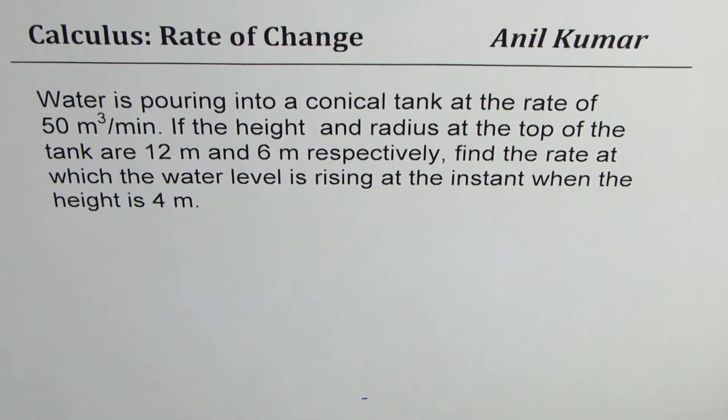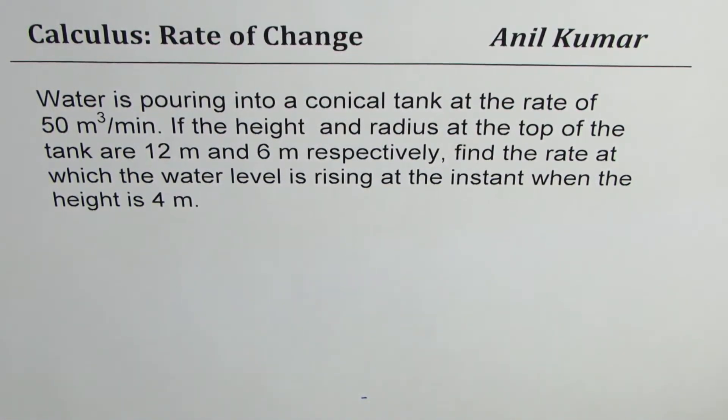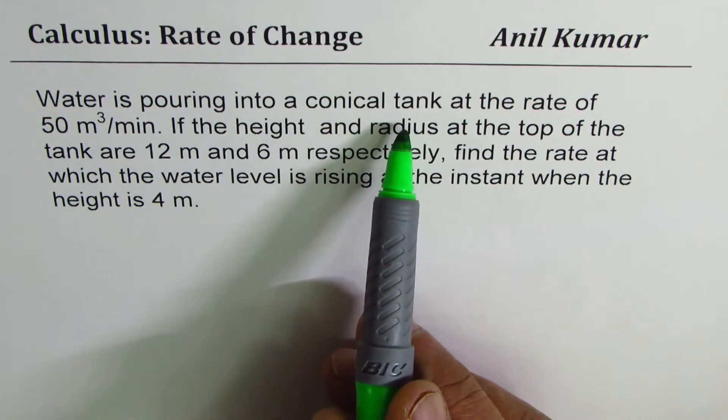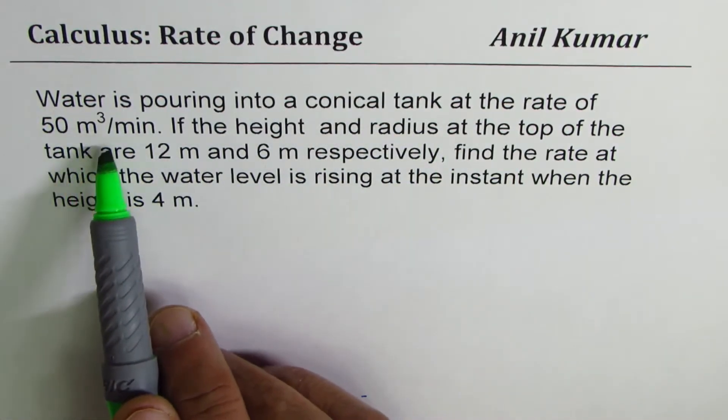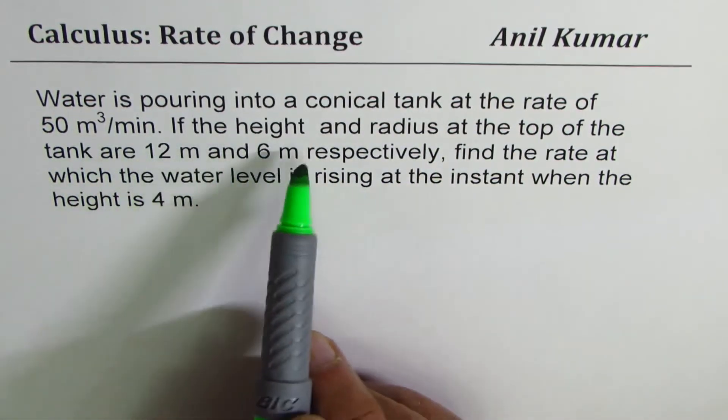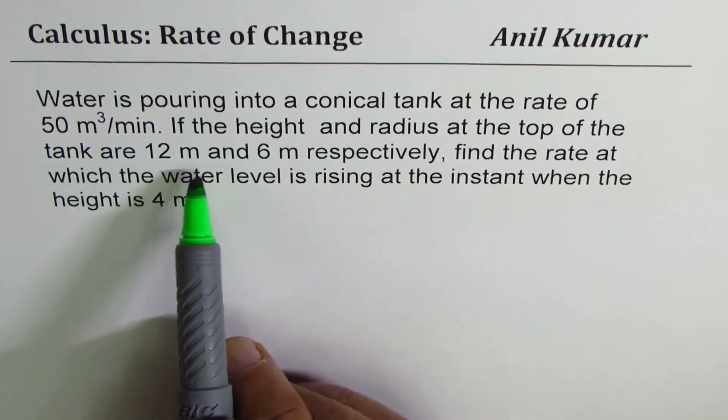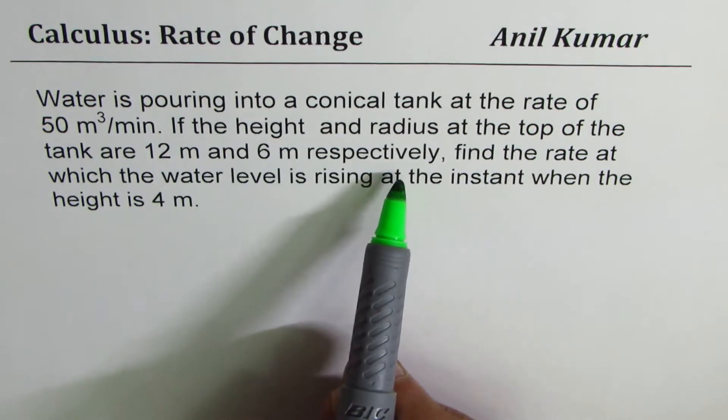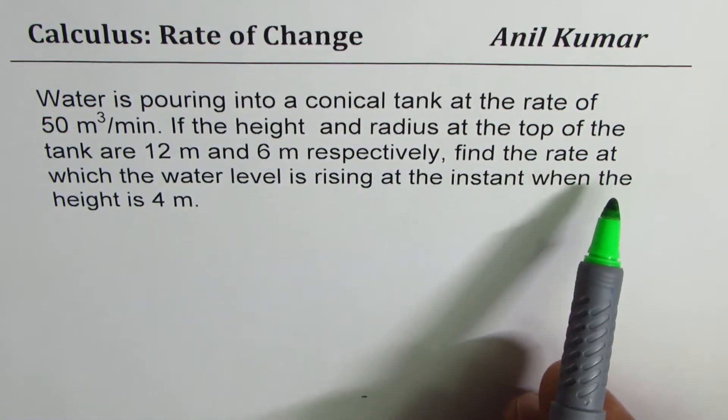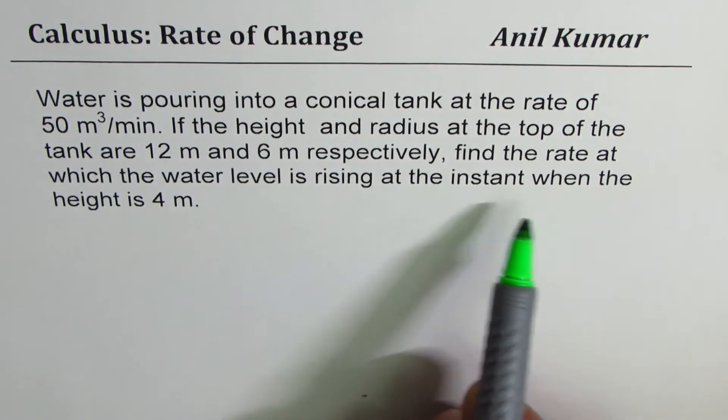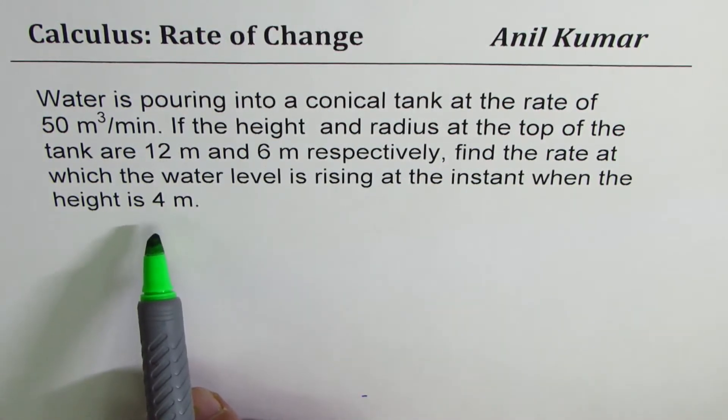I am Anil Kumar sharing with you a few application questions based on rate of change. Water is pouring into a conical tank at the rate of 50 meter cube per minute. If the height and the radius at the top of the tank are 12 meter and 6 meter respectively, find the rate at which the water level is rising at the instant when height is 4 meters.